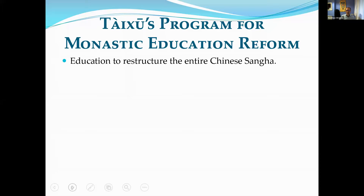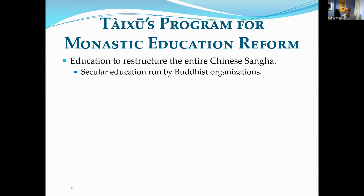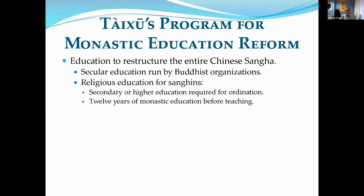Tai Xu's program for monastic education reform made education a key part to restructure the entire Chinese Sangha. There would be secular education run by Buddhist organizations — regular schools teaching secular subjects — as part of the broader movement toward universal literacy. More importantly for the Buddhist community was religious education for the Sangha. Tai Xu required secondary or higher education before ordination, proposed a system of 12 years of monastic education before a monastic could become a teacher, largely inspired by systems in place in Japan.